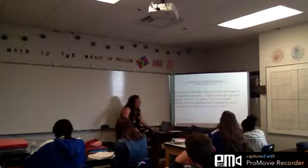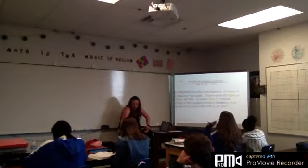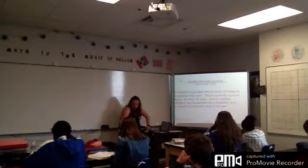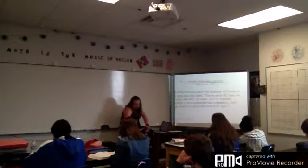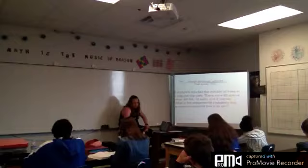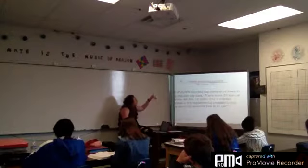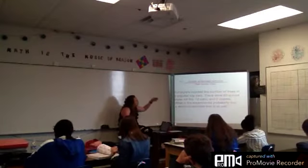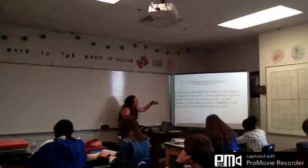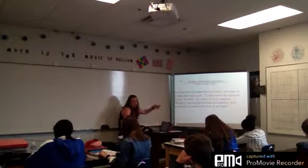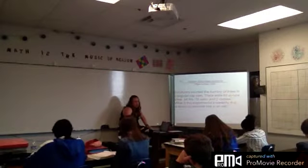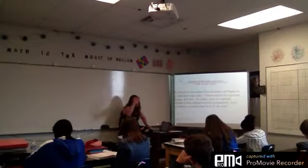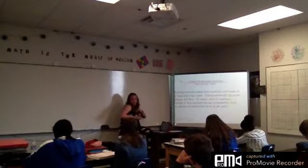The first one we're going to look at is experimental probability. The formula for experimental probability is: probability equals the number of favorable outcomes over the total number of trials. So it's like taking data — what you're looking for over the total.